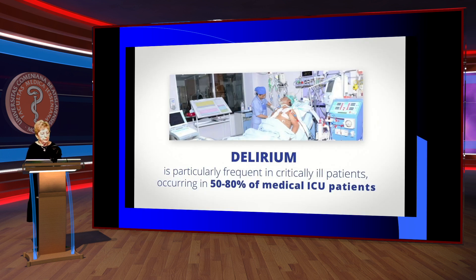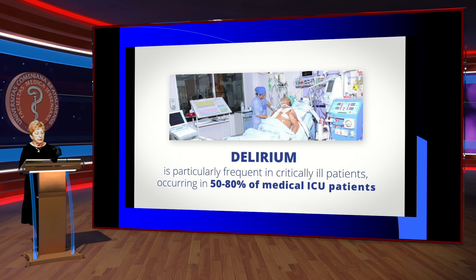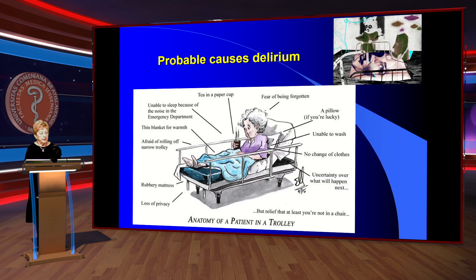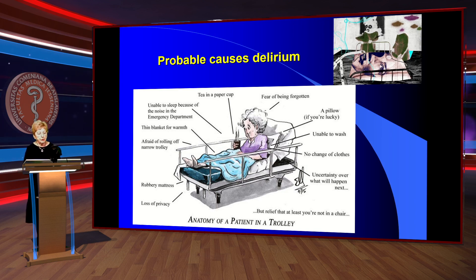Delirium is particularly frequent in critically ill patients, occurring in 50–80% of medical ICU patients — not only after anesthesia but also very often in ICU patients generally. Probable causes of delirium include loss of privacy, no change of clothes, inability to wash, and other autonomy-related factors for the patient.